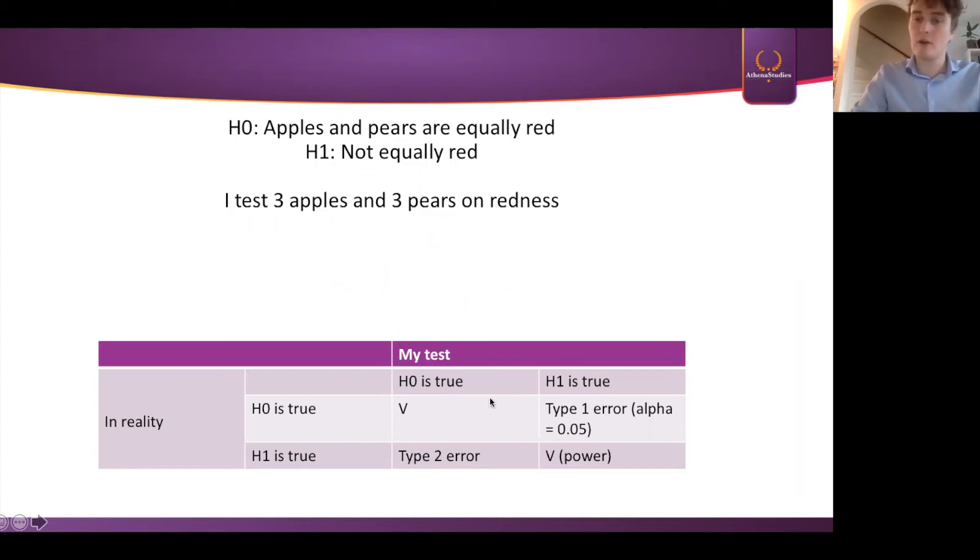However, it could also be the case that in reality H0 is indeed true. So apples and pears are equally red, as we can see here. But my test says something different. It says that they are not equally red. My test says there is an effect. So I made a mistake. I made an error. And this error we call the type 1 error. And this is also something that we call the alpha.